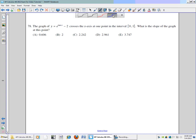This is problem number 78 on the 2012 AP Calculus exam. The graph of y equals e to the tangent of x minus 2 crosses the x-axis at one point in the interval from 0 to 1.